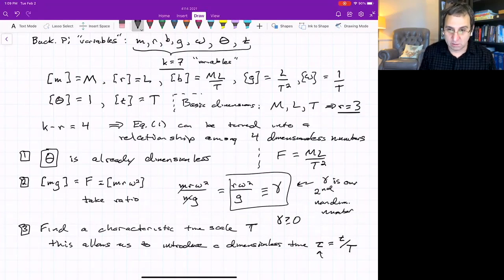But then this dimensionless time will be our third dimensionless number. The way that we can find a characteristic timescale is we just suppose there is one, and we rewrite the derivatives. Instead of being d theta d little t, we write them as d theta d tau and plug them into the equation.